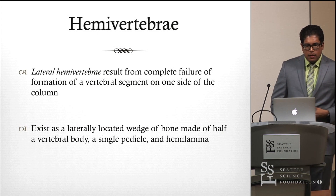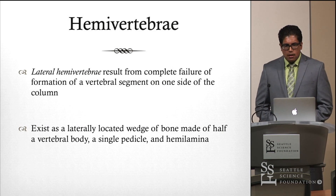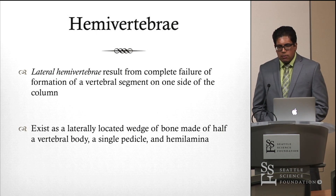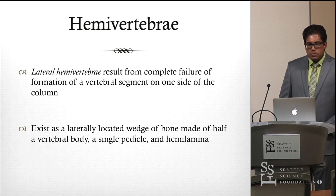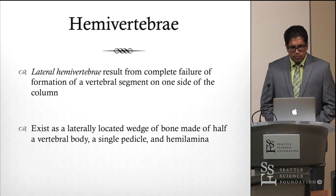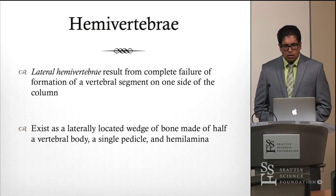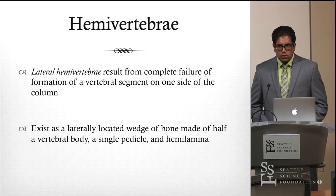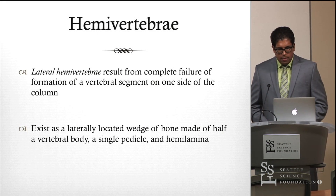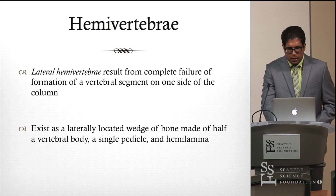There are different types of hemivertebra, but the classification system with the highest clinical relevance is based on its location and relationship with surrounding vertebral columns. The most clinically relevant type is defined as lateral hemivertebra, which results from complete failure of formation of a segment on one side of the column. What you're left with is a laterally located wedge of bone made of half a vertebral body, a single pedicle, and a hemilamina.